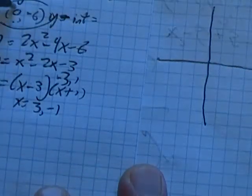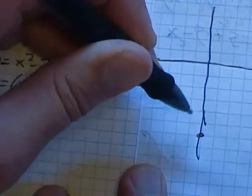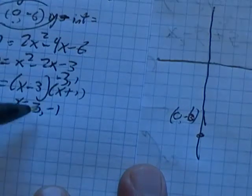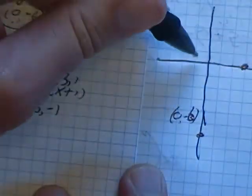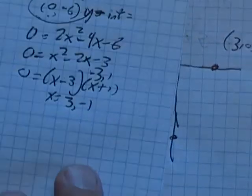My y-intercept was zero, negative six, one, two, three, four, five, six. My x-intercepts are three, zero, and negative one, zero. And now all I need to do is find that vertex.